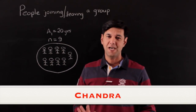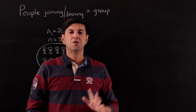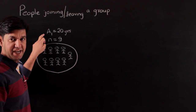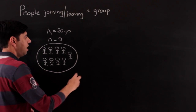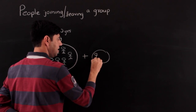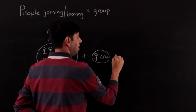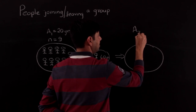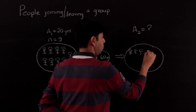In this video we are going to do a standard type of questions where people join or leave a group. Let's start with an example: there's a group of people, the average age is 20 years and there are 9 of them. A new person joins the group — this person is 40 years old — and we want to find the effect on the group. Let's call it average 2.